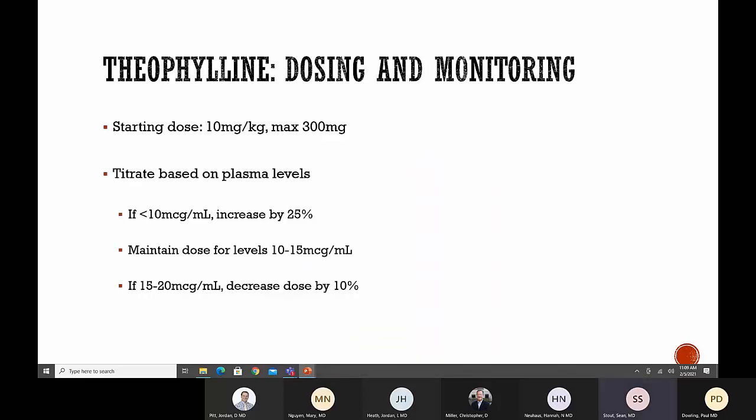If you're going to use theophylline, start at a dose of 10 milligrams per kilogram with a max starting dose of 300 milligrams. You have to monitor plasma levels and titrate the dose accordingly. It has a very narrow therapeutic window between 10 to 20 micrograms per milliliter. If your first level is less than 10, increase the dose by 25%. If between 10 to 15, maintain the dose. But once you get to 15 and above, you start to worry about side effects, so decrease the dose by 10%.